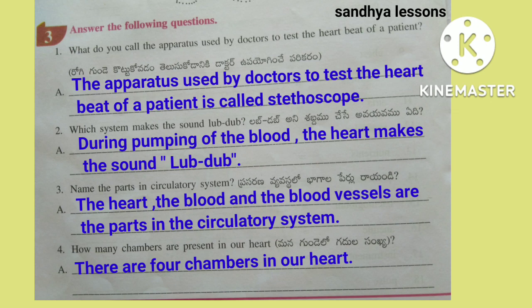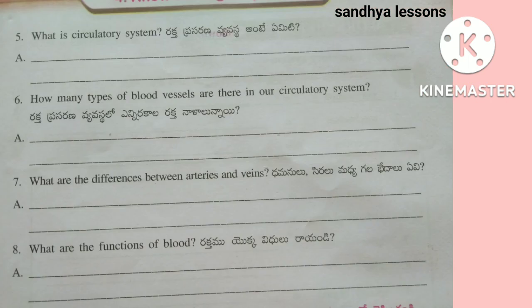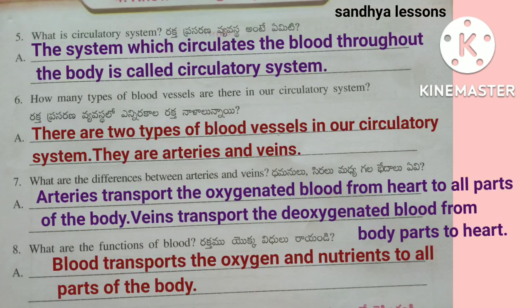The heart makes the sound 'lub-dub'. Third question: Name the parts in the circulatory system. The heart, the blood, and the blood vessels are the parts in the circulatory system. Fourth question: How many chambers are present in our heart? There are four chambers in our heart. Fifth question: What is the circulatory system? The system which circulates the blood throughout the body is called the circulatory system.